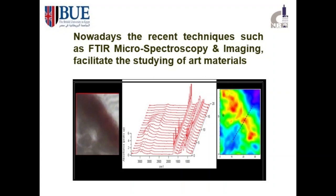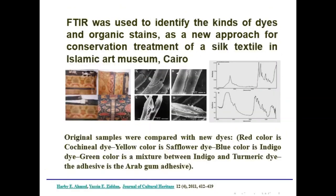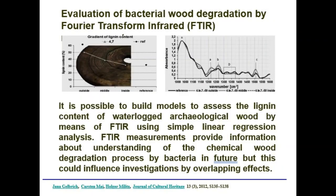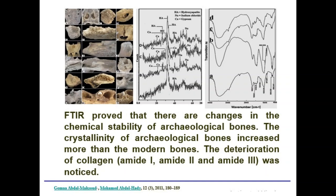Looking at some examples of how FTIR can be used in the analysis of cultural heritage: in Islamic art, FTIR analysis of organic extract from red paste using petroleum distillates confirmed the presence of beeswax — a study conducted in Islamic Cairo. Another study used FTIR to identify dyes and organic stains for conservation treatment of a Celtic-style piece at the Islamic Art Museum in Cairo. Further studies applied FTIR to the evolution of bacterial wood degradation, and to study the burial environment of crocodile bones from the Hawara excavation in Fayoum.